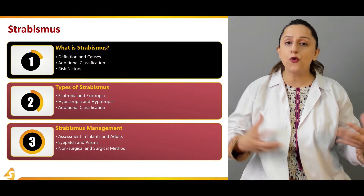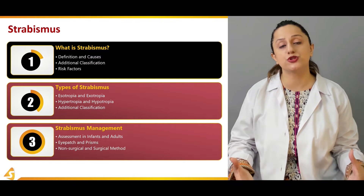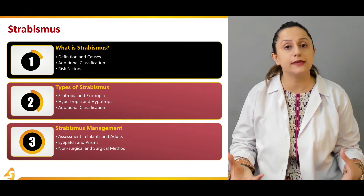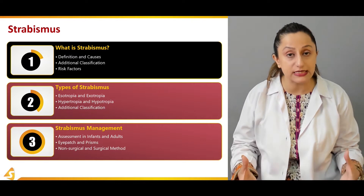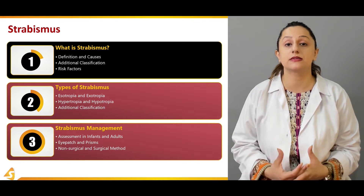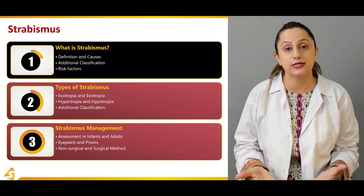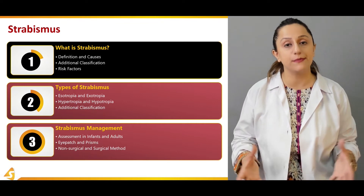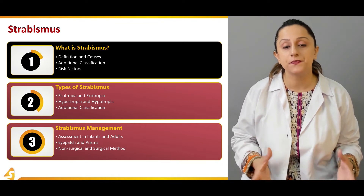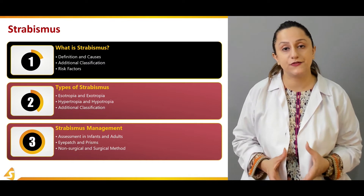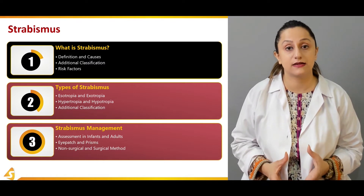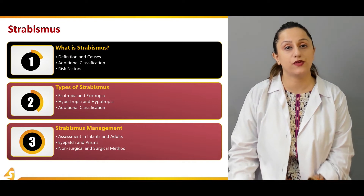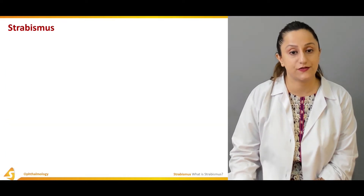There are pre-conditions which make a person more prone to developing strabismus. These include muscular weakness, nerve damage, trauma, infections, and certain syndromes. All of these can manifest as strabismus in a person.